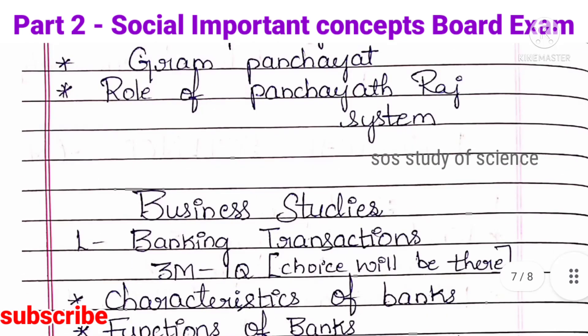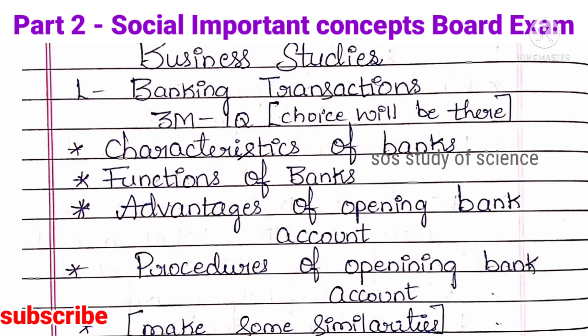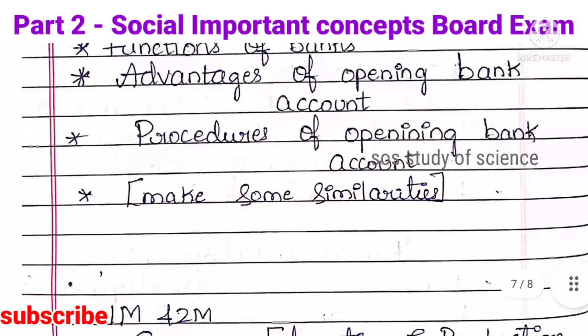Moving to Business Studies. The first lesson is Banking Transactions. Here, one 3-mark question is asked — sometimes a choice will be given. Learn thoroughly about: advantages of opening a bank account, procedures for opening a bank account, characteristics of banks, and functions of banks. These are very important concepts. Write clearly in the examination and make note of common points across topics. Learn characteristics and functions of banks thoroughly.